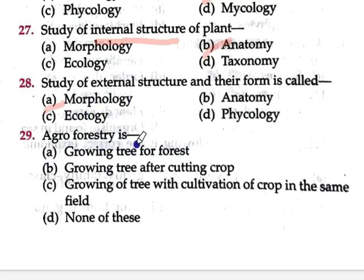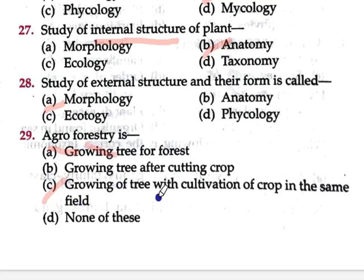Question number 29: Agroforestry is — option A growing tree for forest, option B growing tree after cutting crops, option C growing of tree with cultivation of crop in the same field, option D none of these. 'Agro' means crop and 'forestry' refers to forest plants. Option C is correct — agroforestry means growing trees along with cultivation of crops in the same field.